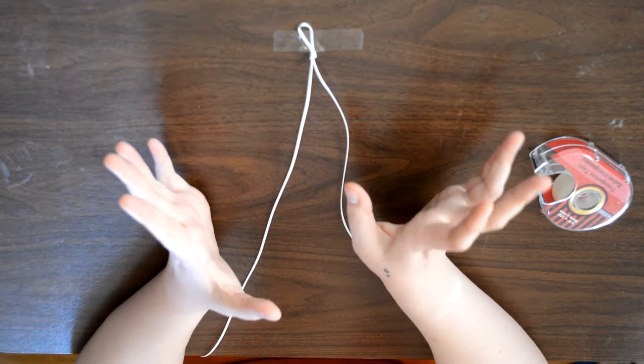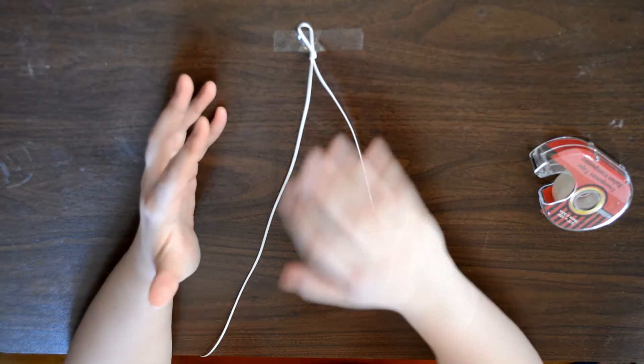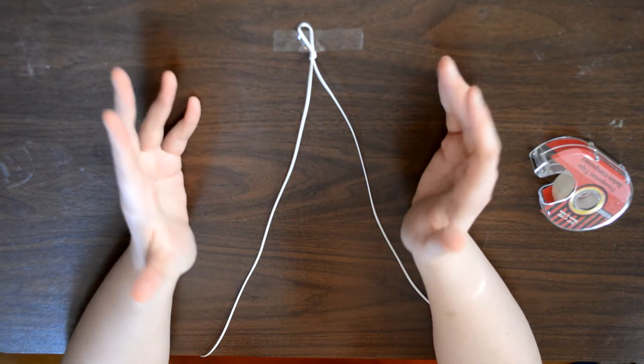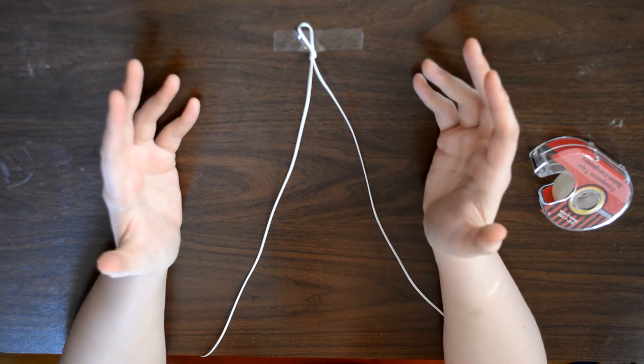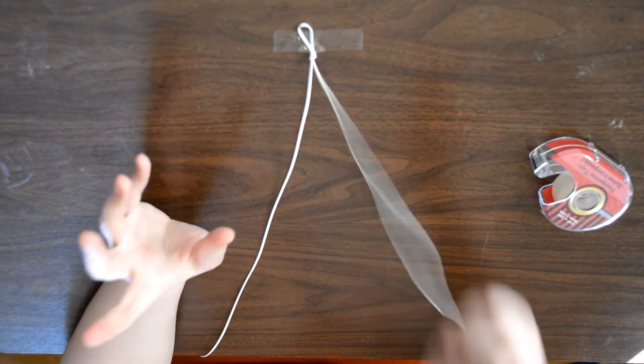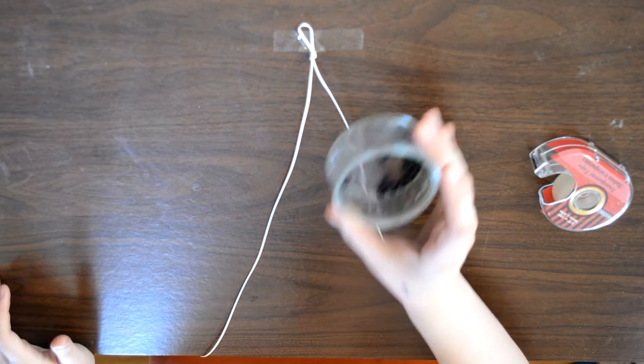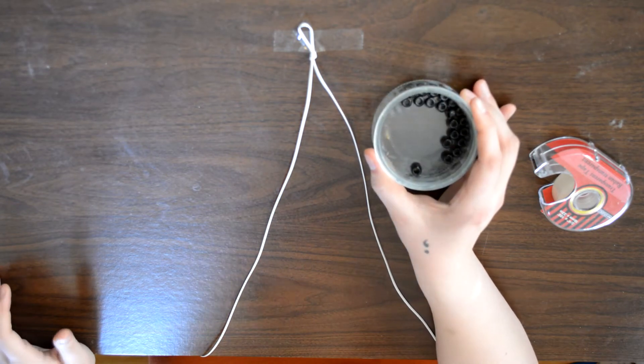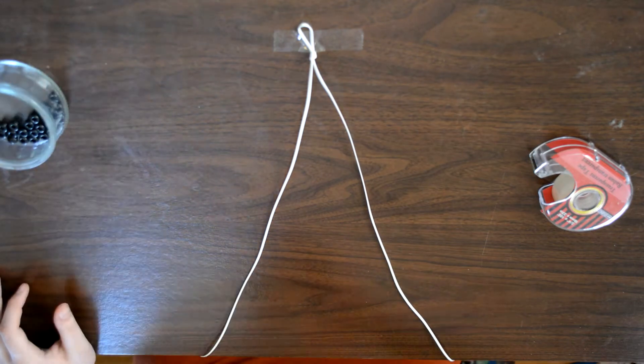So the first one we're making is a ladybug. This one's going back to basics, it's fairly simple just like the gecko and just like the butterfly keychain I've done on my channel before. This one requires two colors of beads. You will need black beads, and this is 20 black beads.